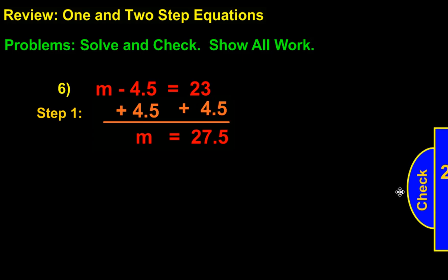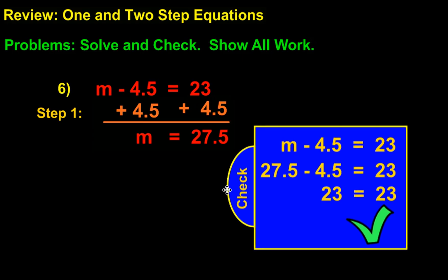Now we need to check that to make sure it works out. You take the original problem and substitute for m what you found to be the answer. In this case, 27.5 minus 4.5 equals 23. 23 equals 23, so our check works.